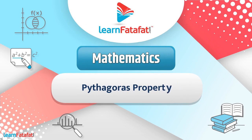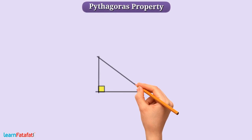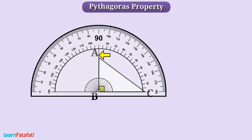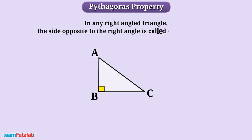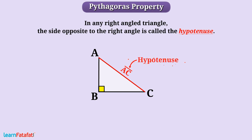Today we will learn Pythagoras property. Here is a right angle triangle ABC having right angle at B. In any right angle triangle, the side opposite to the right angle is called hypotenuse. So here AC is the hypotenuse.